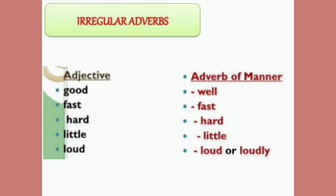Some more examples of irregular forms: adjective good → adverb well, fast → fast, hard → hard, little → little, loud → loud (or loudly). This way you can form adverbs from adjectives. You just need to remember the rules, and if you practice at home, you can do it very easily.